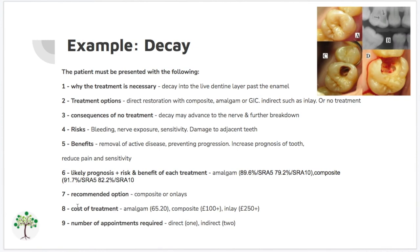That's where the recommended option comes in, along with presenting the cost of treatment: amalgam costs around £65, composites can cost anywhere from £100 and onwards, and inlays — the indirect restoration option — can cost anywhere between £250 and above. For number of appointments required: if the patient goes for a direct restoration, it'll be only one appointment, whereas if they go for an indirect option, you're looking at two separate appointments — taking impressions in the first and fitting in the next.